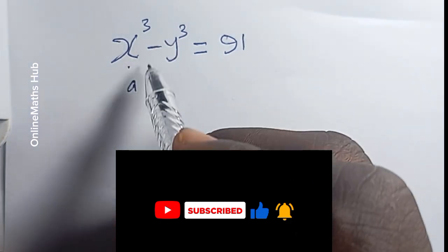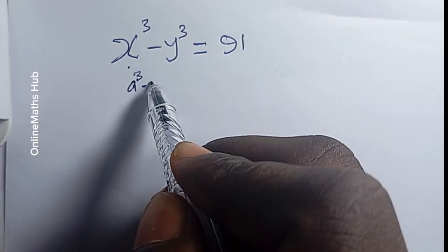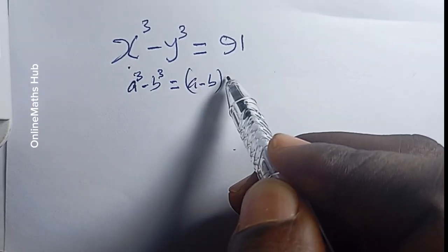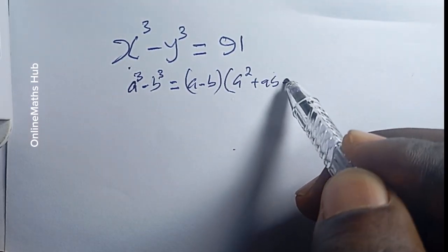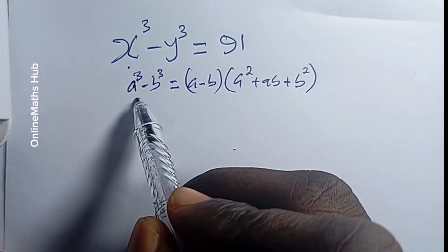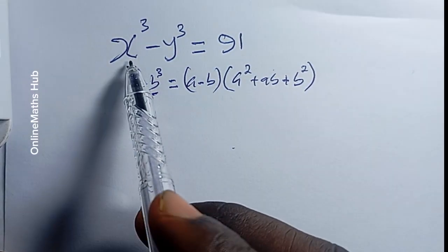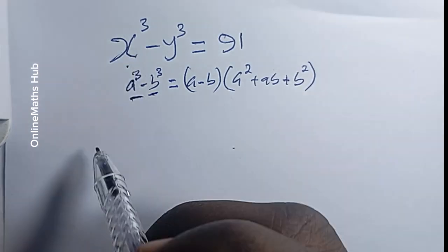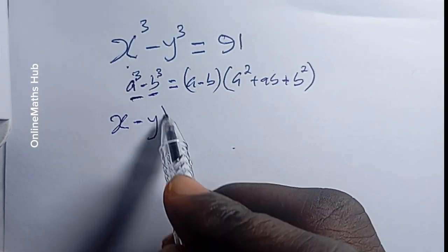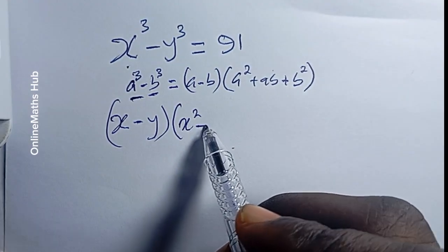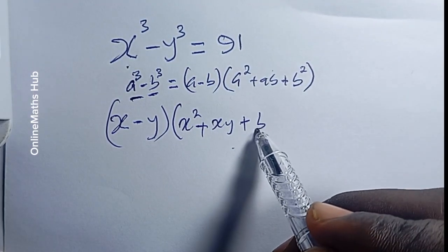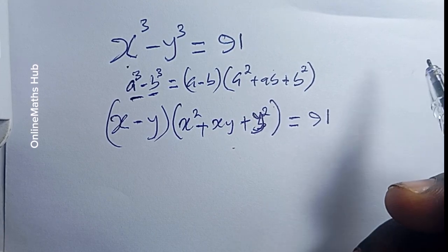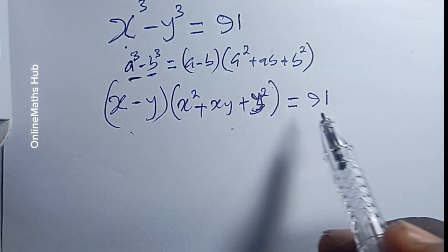The identity says that a³ minus b³ is equal to (a minus b) multiplied by (a² plus ab plus b²). This is the difference of two cubes. In this case, we expand it in this form, giving us (x minus y) multiplied by (x² plus xy plus y²), and this is equal to 91.